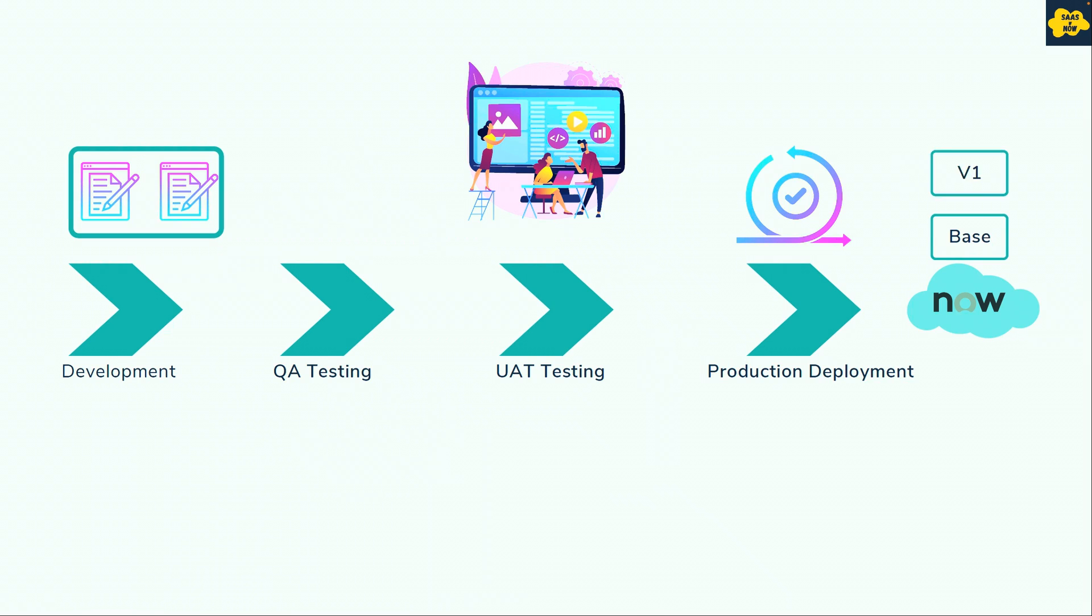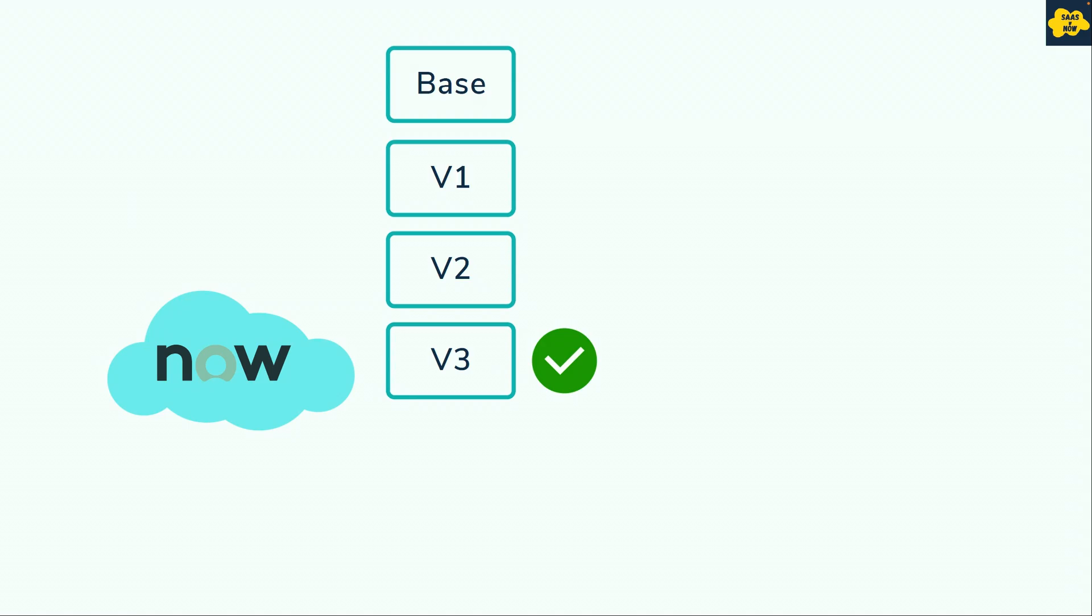Let's say the current version is V3. After few production deployments, which means the ServiceNow production system now has all the features